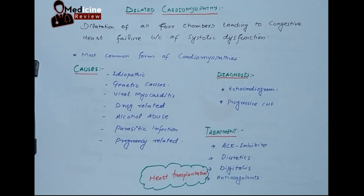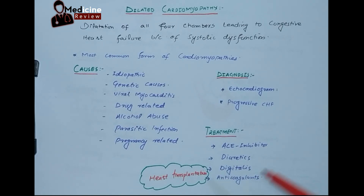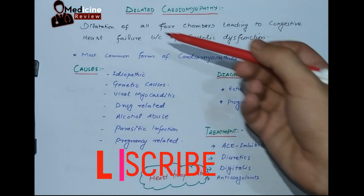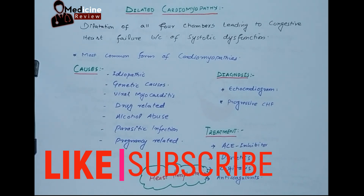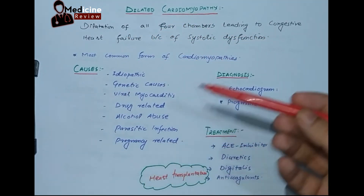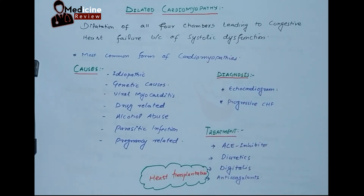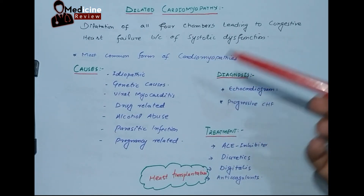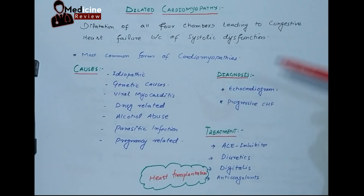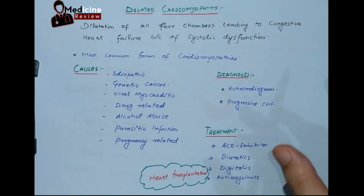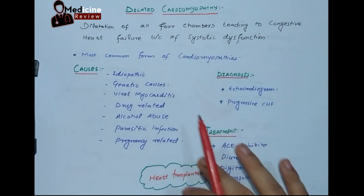Welcome to my YouTube channel. As we were discussing about the cardiomyopathies, the first and most common type is dilated cardiomyopathy. It is basically the dilation of all cardiac chambers, specifically the ventricles. Because of that there will be systolic dysfunction, and because of the systolic dysfunction there will be congestion, which is called congestive heart failure.